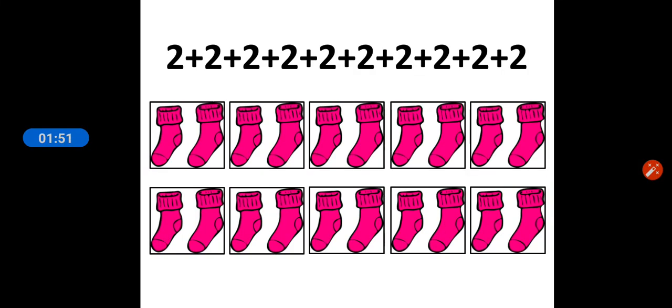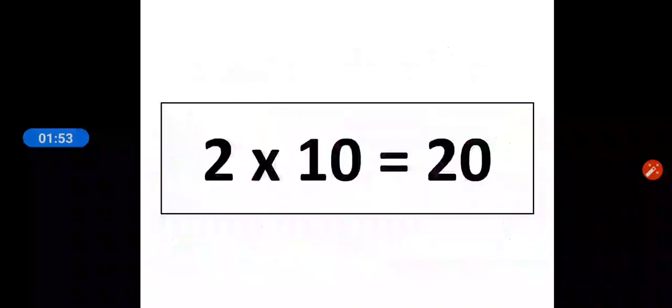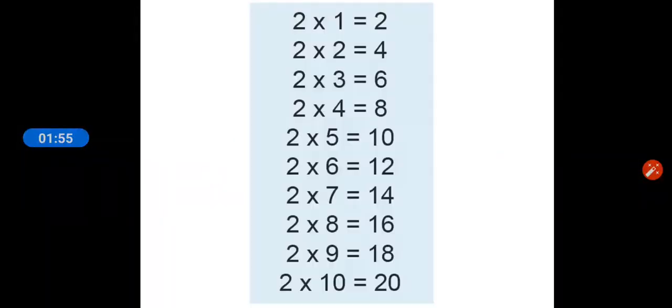So let's read with me: two ones are two, two twos are four, two threes are six, two fours are eight, two fives are ten, two sixes are twelve, two sevens are fourteen, two eights are sixteen, two nines are eighteen, and two tens are twenty. Now what you have to do is you have to learn it.